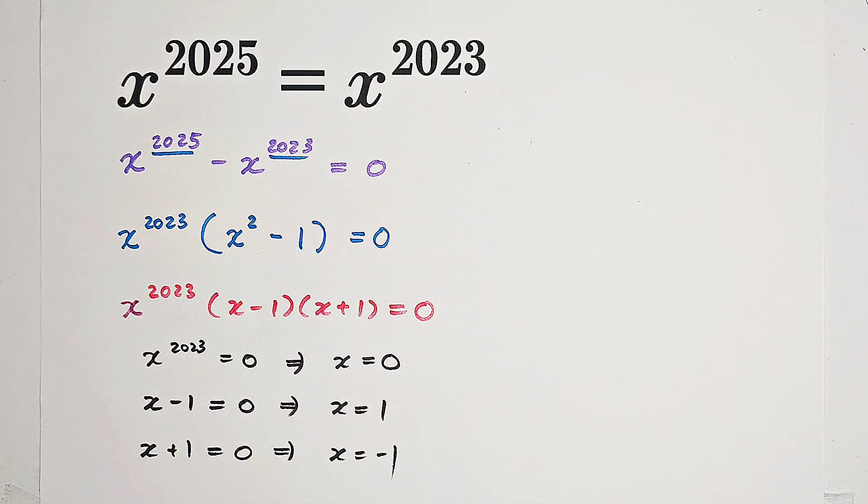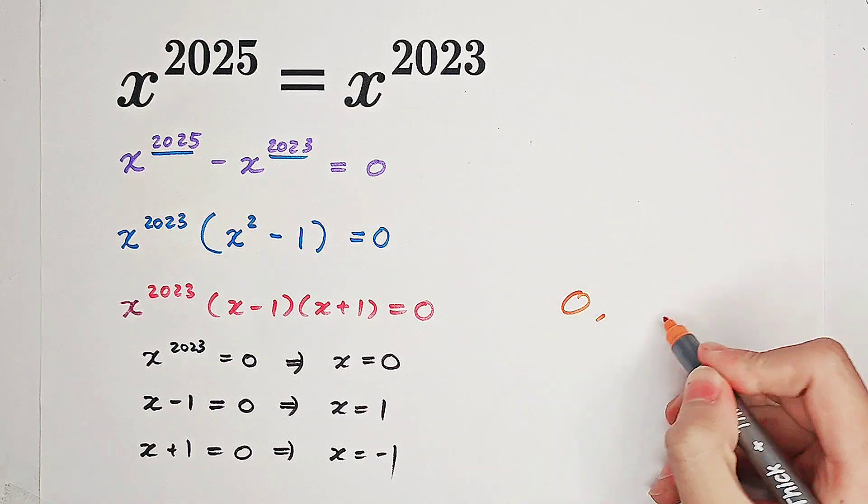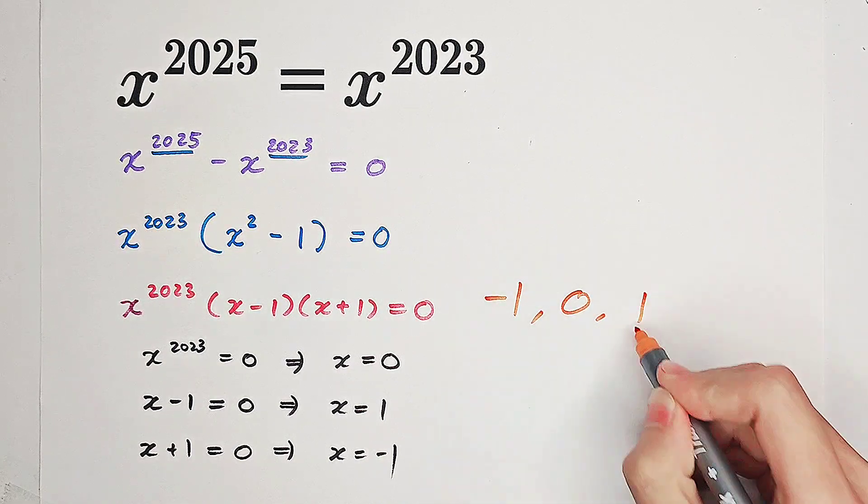So in total there are three solutions to this equation: 0, -1, and 1.